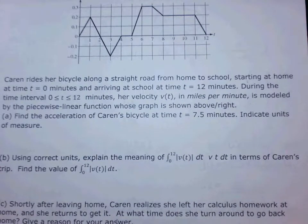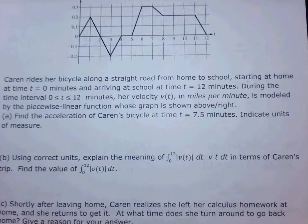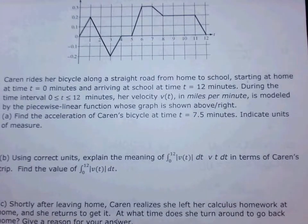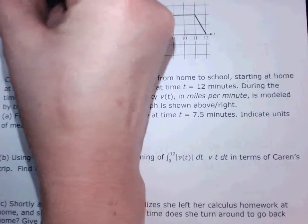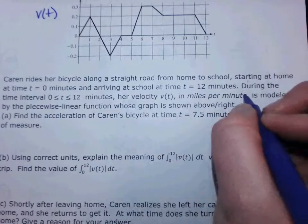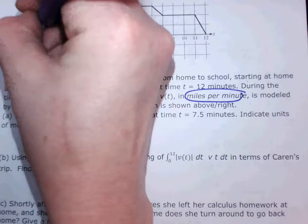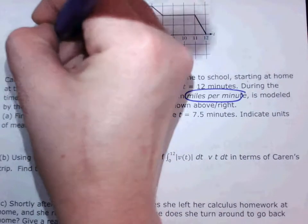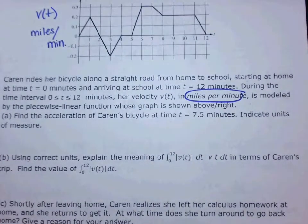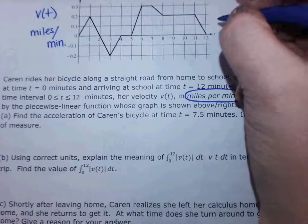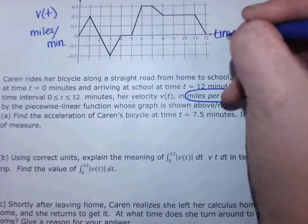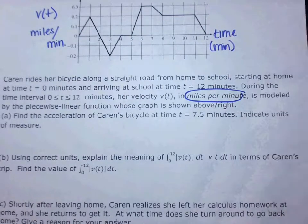First question — I would always relabel your graph. What is in our graph? Velocity. What is it measured in? Miles per minute. What is on the x-axis? Time, which is measured in minutes. Part A says to find the acceleration. If this is velocity, what is acceleration? The slope — acceleration is the derivative, which is a slope. Go to 7.5 on your graph and count the slope. It is a trick question, so make sure you count carefully.